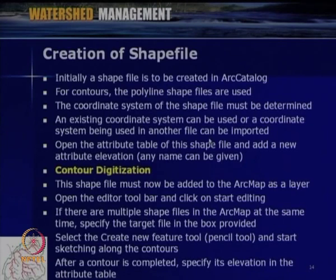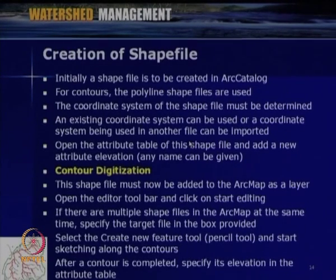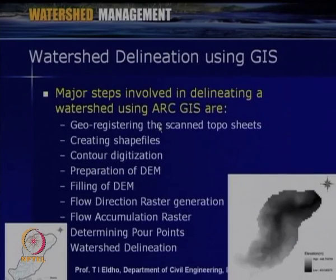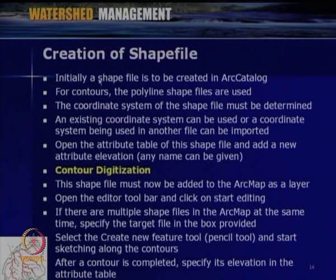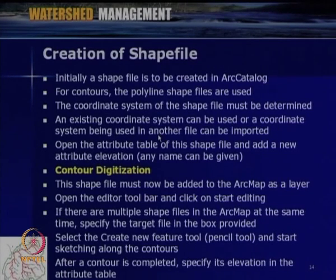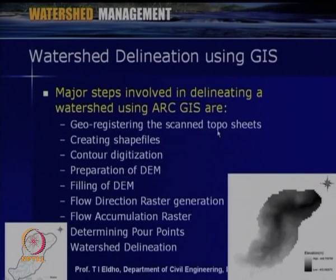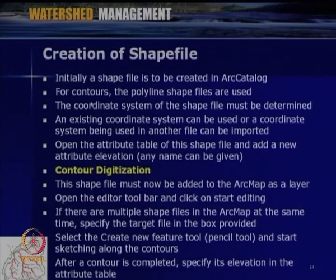Step by step: once georegistering is done, the next step is creation of shape files. Initially a shape file is to be created in ArcCatalog in the ArcGIS environment. For contours, polyline shape files are used; the coordinate system must be determined and an existing coordinate system can be imported. Open the attribute table of the shape file and add a new attribute called 'elevation'.